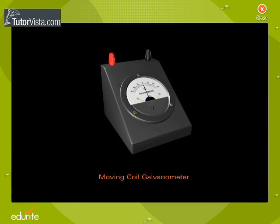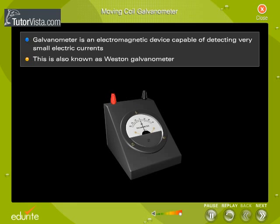Moving Coil Galvanometer. A galvanometer is an electromagnetic device capable of detecting very small electric currents. This is also known as the Western Galvanometer.